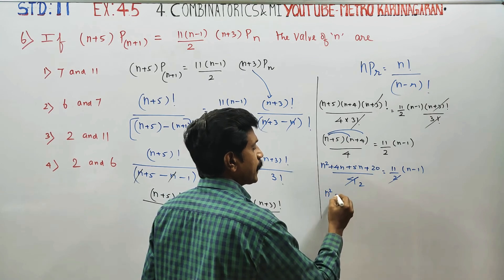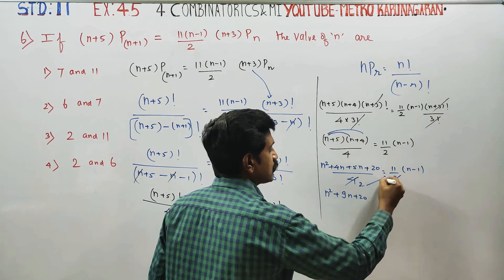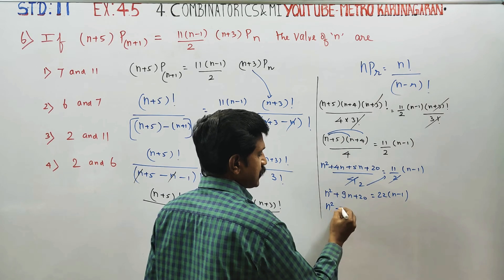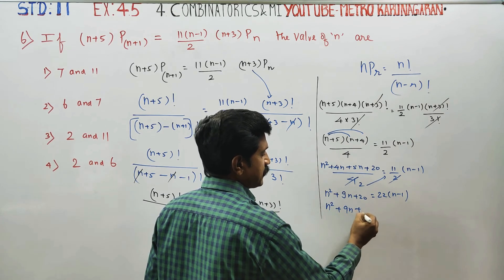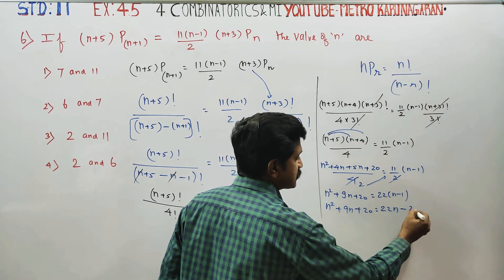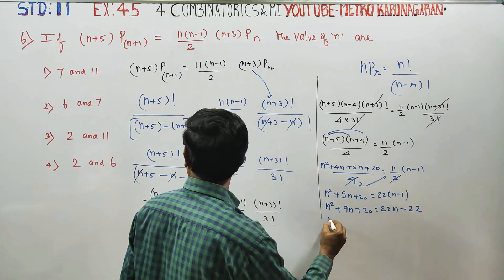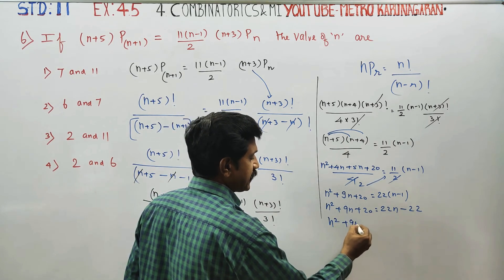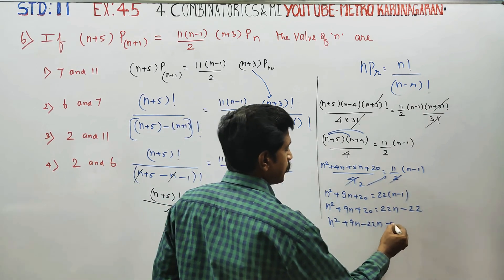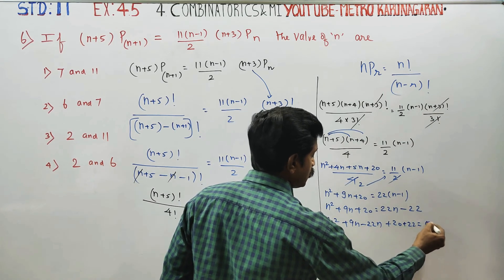n squared plus 9n plus 20. Cross multiply: 22 into n minus 1. So n squared plus 9n plus 20 is equal to 22n minus 22. Bring all to one side: n squared plus 9n minus 22n plus 20 minus 22, plus 22 equal to 0.